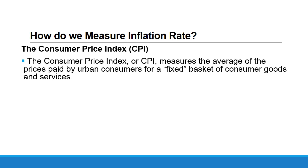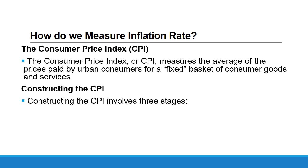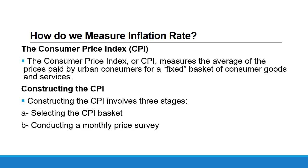There are three steps for constructing the CPI. Step one: select the CPI basket — choose all goods and services to be included. Step two: conduct a monthly price survey — survey the changes in prices of these goods and services monthly. Step three: calculate the CPI, which is then used to calculate the inflation rate.